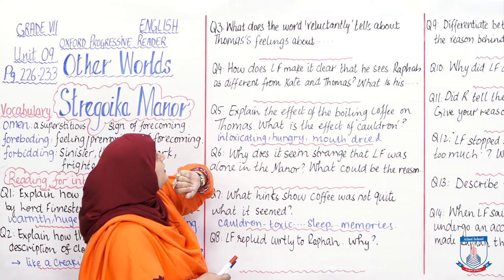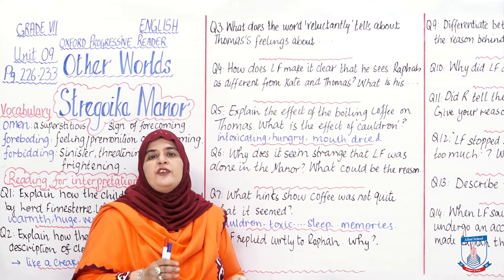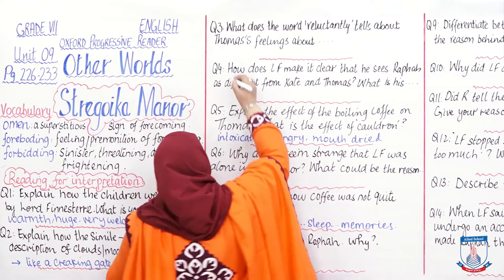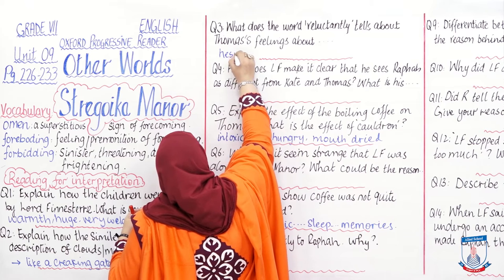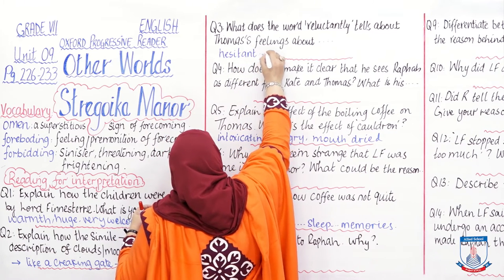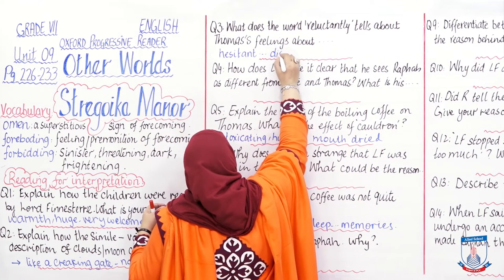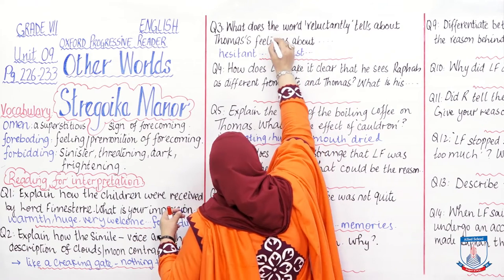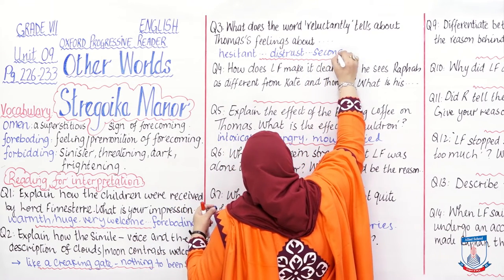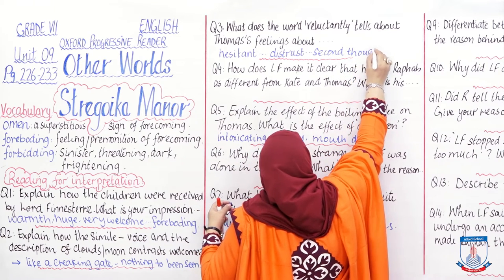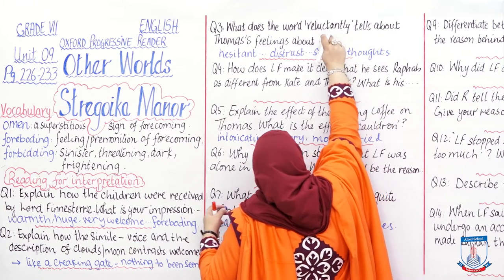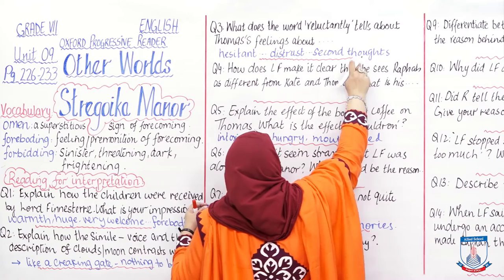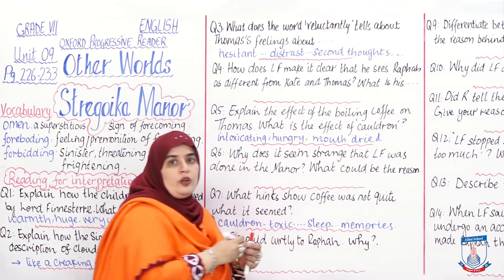Question: What does the word 'reluctantly' tell us about Thomas's feelings about Lord Fenister and his house? He was reluctant — reluctant means hesitant. He was thinking before going inside, which meant he was full of distrust. He was not trusting Lord Fenister and had second thoughts about whether he should enter the house or not. So the word 'reluctantly' tells us he was hesitant, full of distrust, and having second thoughts about entering the manor.